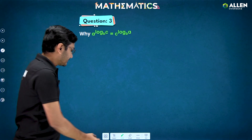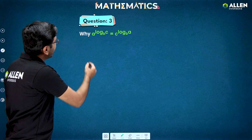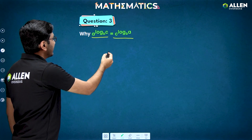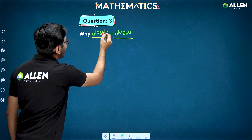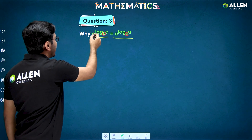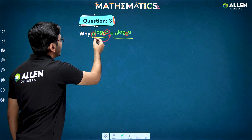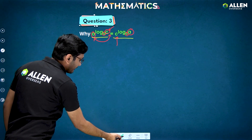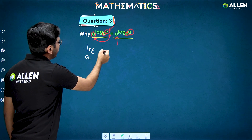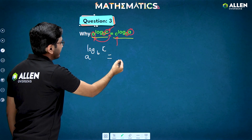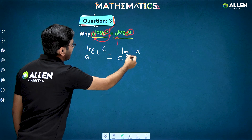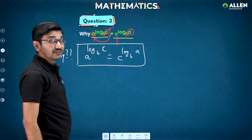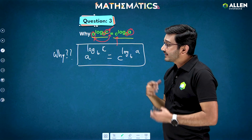Now have a look at this another question. Here you see a to the power log of c to the base b is equal to c to the power log of a to the base b. Just look at the left hand side and right hand side: the base b of the logarithm is constant, but the a and c terms have exchanged. Whenever we have such a property like a to the power log of c to the base b, we can write this as c to the power log of a to the base b. But our question is why we can do so.